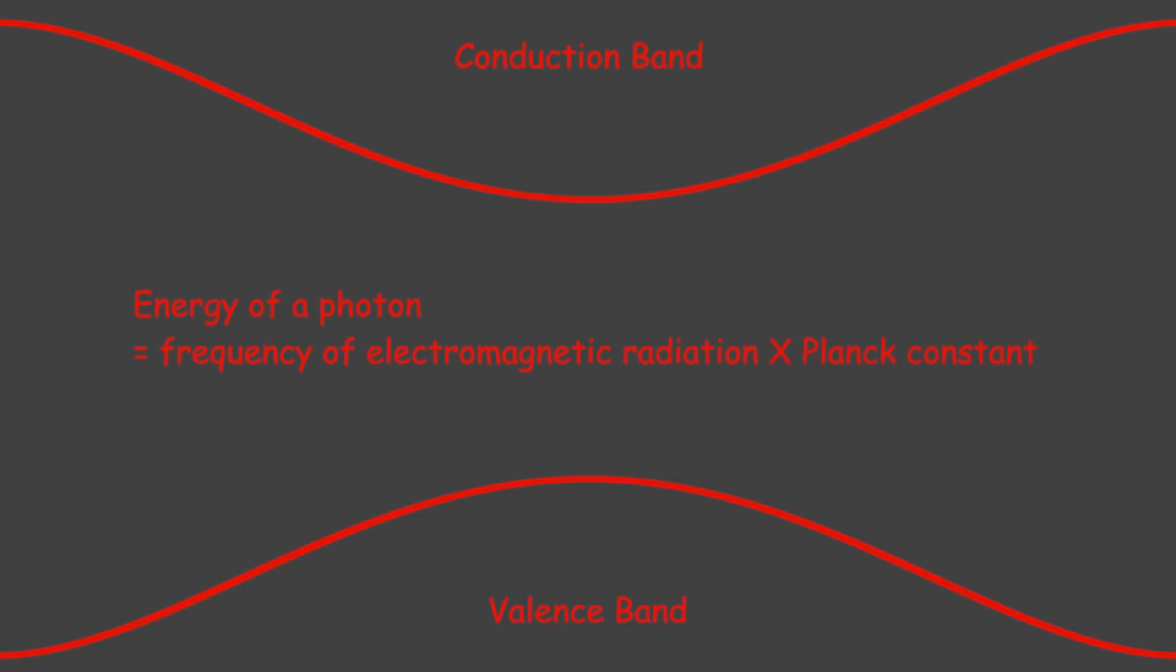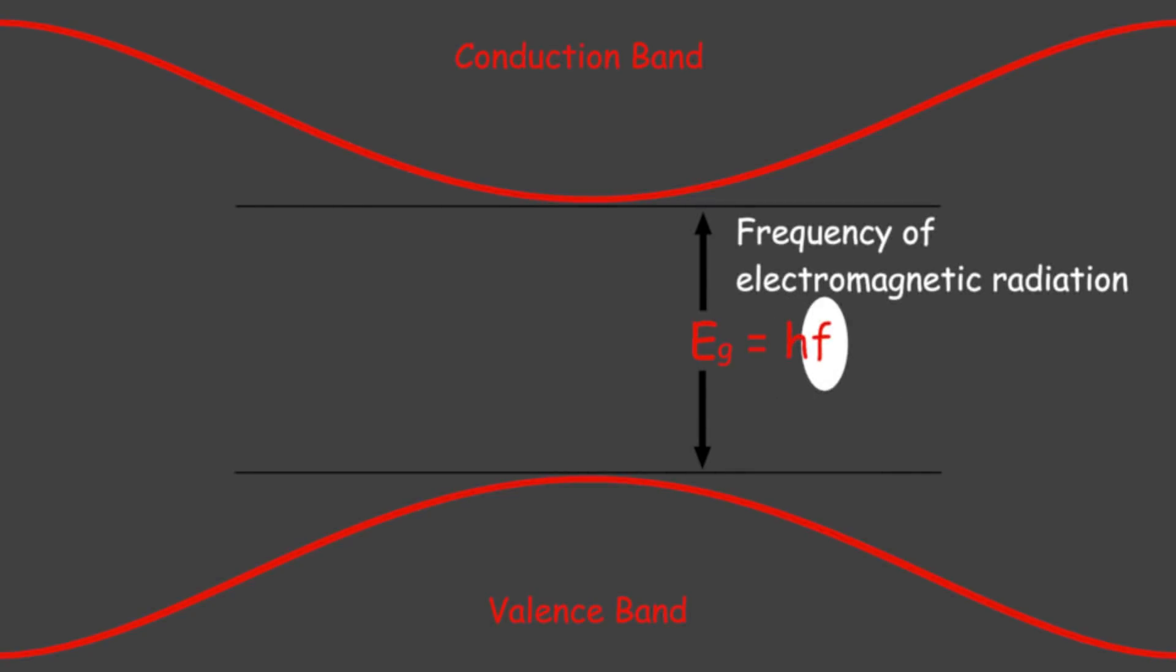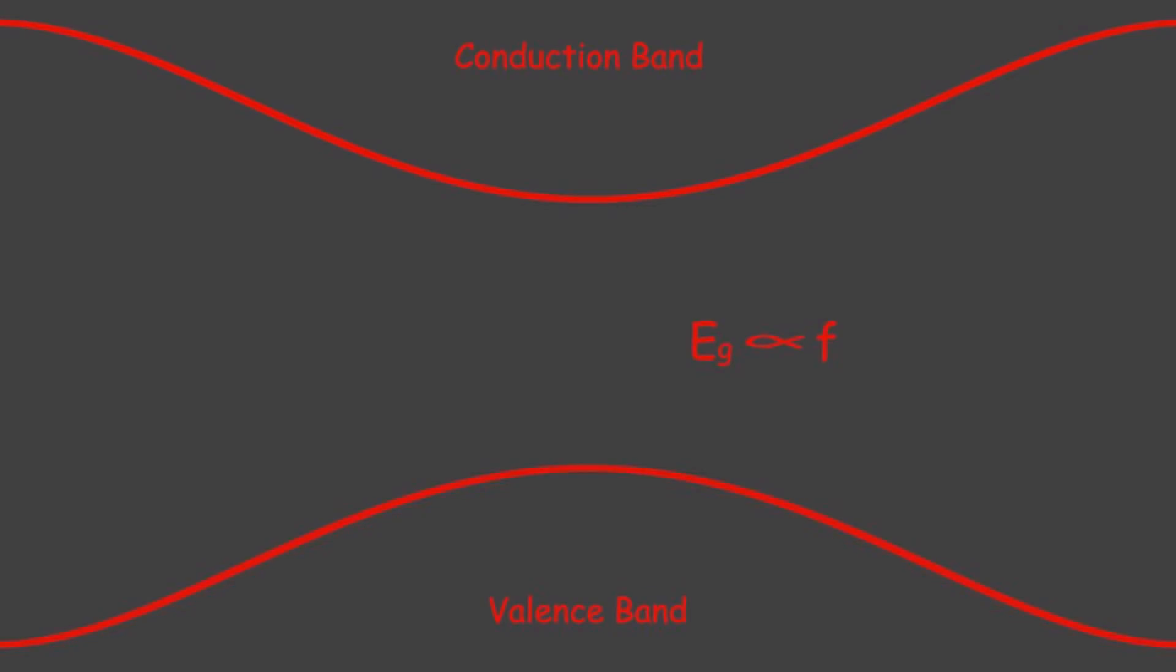Now consider the energy gap is EG. Hence, EG equals HF, where H is Planck constant, and F is the frequency of electromagnetic radiation. Now it can be said that EG is proportional to F. So if we adjust this band gap, EG, we can produce such electromagnetic wave whose frequency will be in our visual range. This is what we do in light-emitting diode.